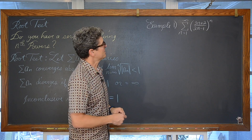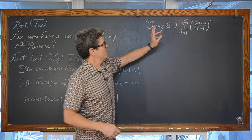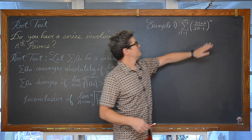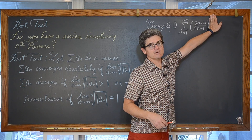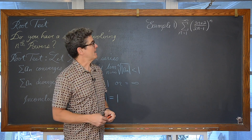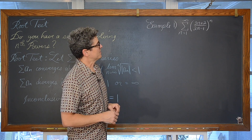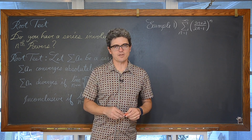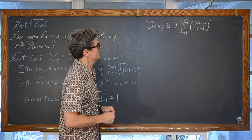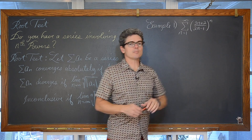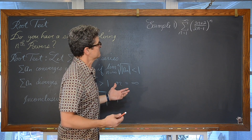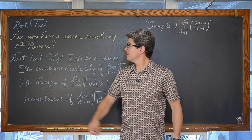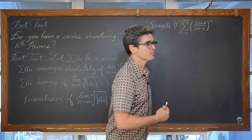The limit as n approaches infinity of (3n + 2)/(2n − 1) to the nth power. Now if that nth power was not there, we would just do the limit as n approaches infinity of (3n + 2)/(2n − 1) and the nth term test would fail because that limit is not equal to zero. But we have that extra complication with a power of n. The entire expression in my series has that nth power. Let's see what happens when we do the root test.